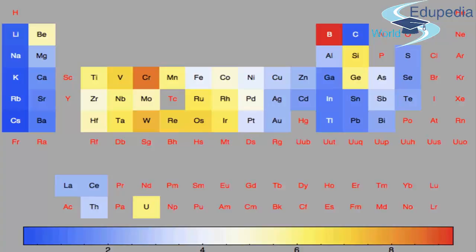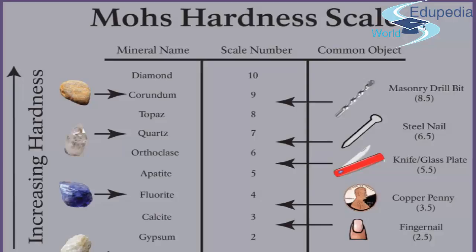The Mohs hardness scale is rated from 1 to 10, with reference minerals at each level: talc, gypsum, calcite, fluorite, apatite, orthoclase, quartz, topaz, corundum, and diamond. Diamond sits at the top — at 10 — on the Mohs hardness scale.